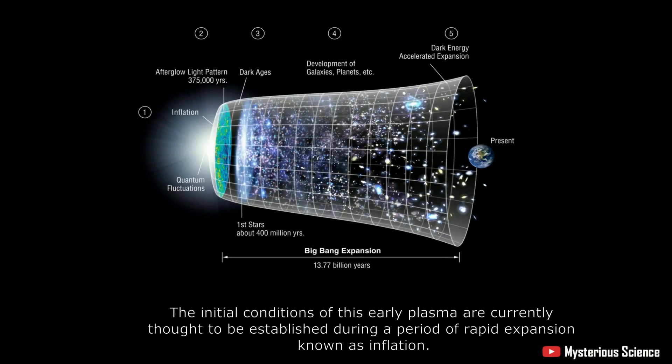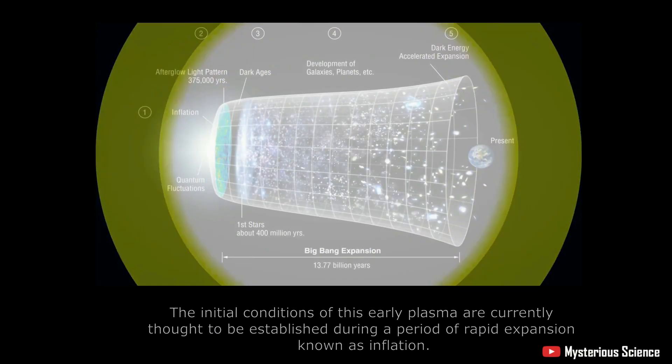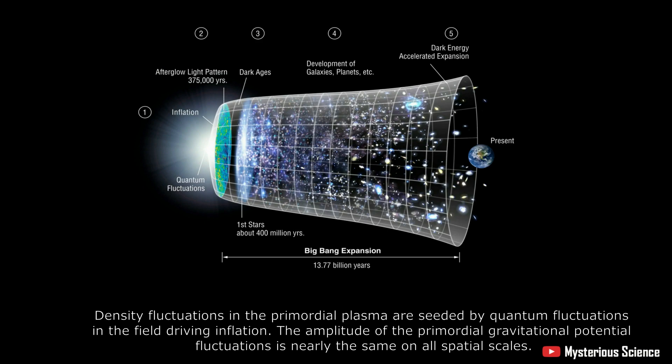1. The initial conditions of this early plasma are currently thought to be established during a period of rapid expansion known as inflation. Density fluctuations in the primordial plasma are seeded by quantum fluctuations in the field driving inflation. The amplitude of the primordial gravitational potential fluctuations is nearly the same on all spatial scales.